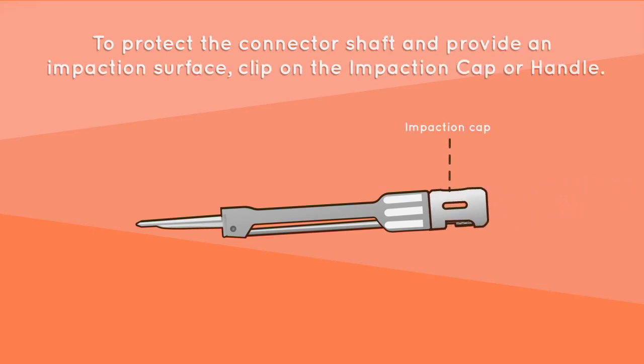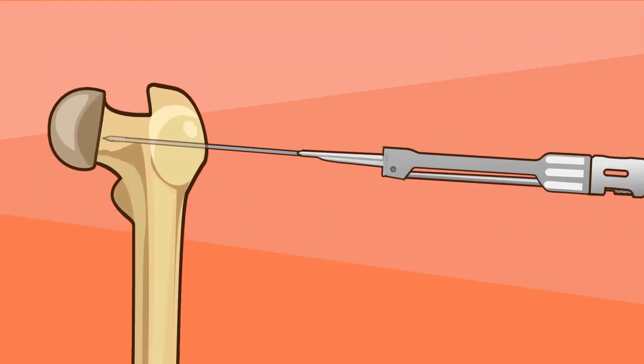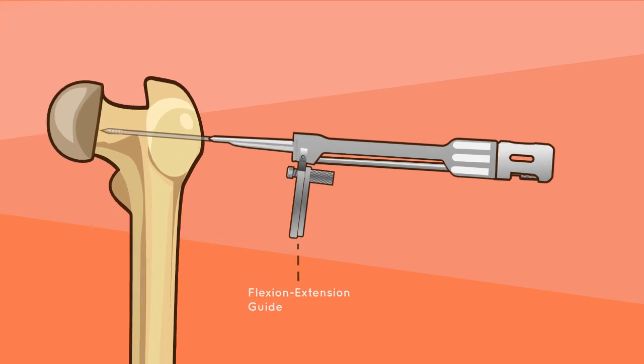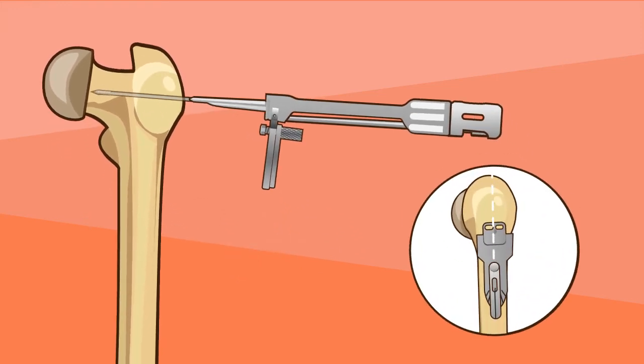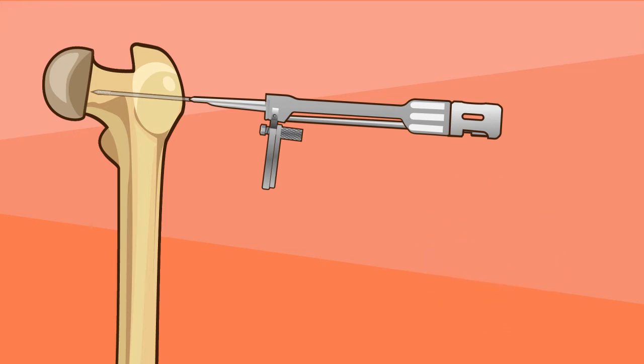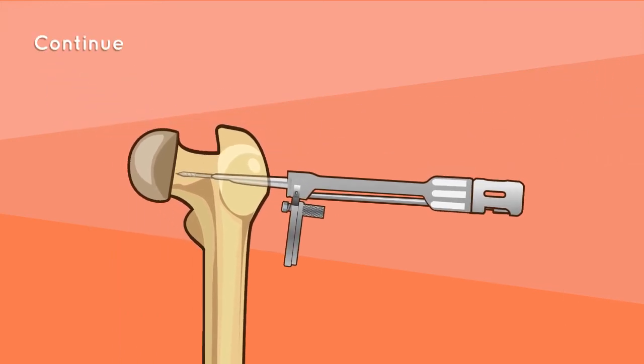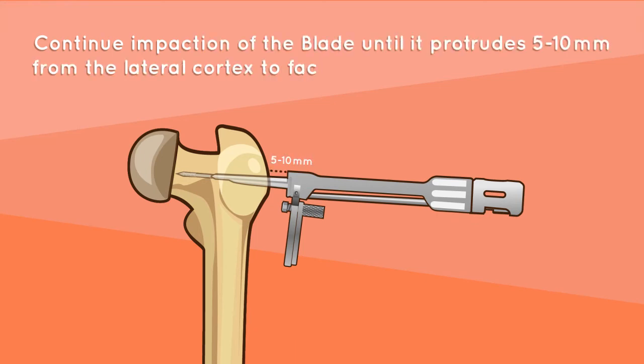To protect the connector shaft and provide an impaction surface, clip on the impaction cap or handle. Slide the blade and joystick assembly over the guide wire up to the lateral cortex. Clip the flexion-extension guide onto the joystick to confirm the orientation of the blade before insertion. Place the dial of the flexion-extension guide to the desired correction angle. Drive the blade by impacting the back end of the impaction cap or handle with a standard mallet. Continue impaction of the blade until it protrudes 5 to 10 millimeters from the lateral cortex to facilitate assembly with the plate.